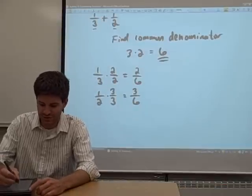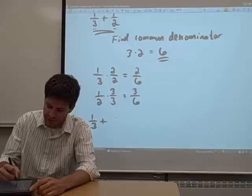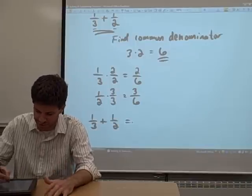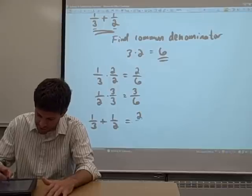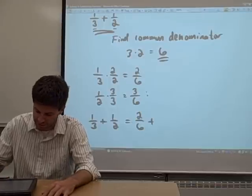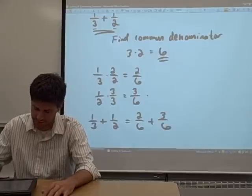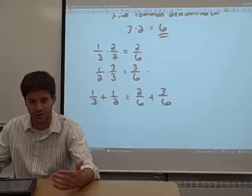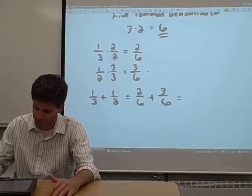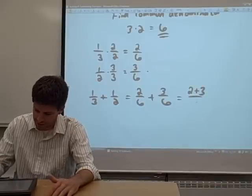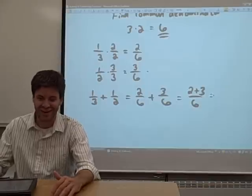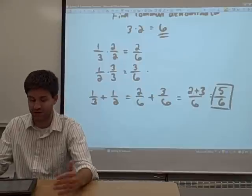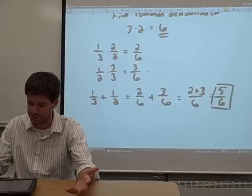So what we've done is we've changed this problem up here, this one-third plus one-half, into a problem that we can actually solve. The one-third we converted into two-sixths. The one-half we converted right here into three-sixths. Those two fractions have the same denominator so we can add them. Add the numerators, you get two plus three. The denominator stays the same. Two plus three equals five. The denominator is six. The fraction is in lowest terms so we don't have to reduce it and we're finished.